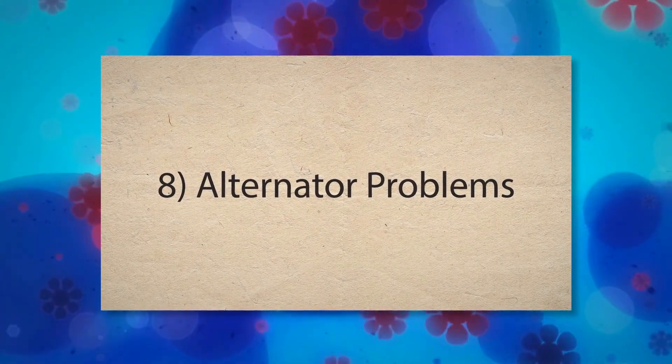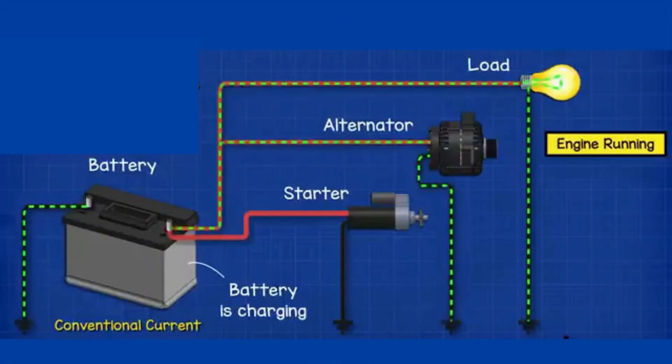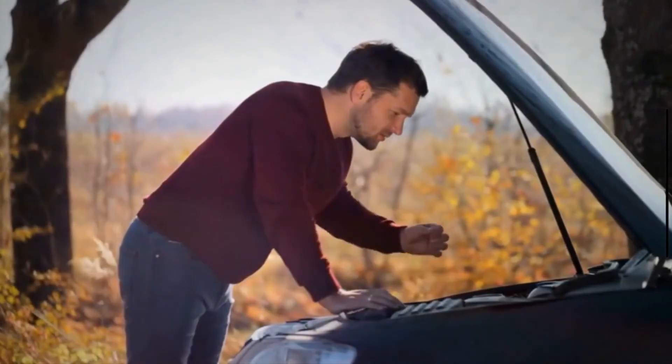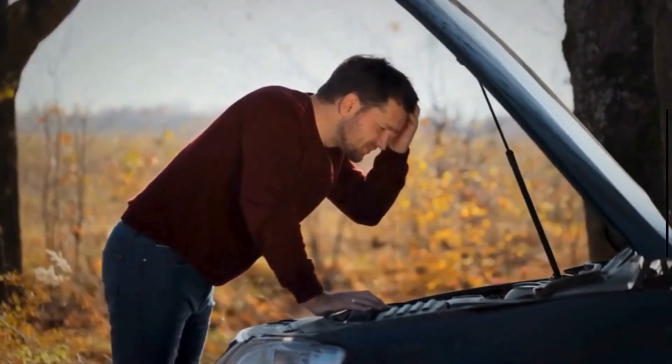Eighth, alternator problems. The alternator charges the battery and powers the vehicle's electrical systems. If it fails, the battery can drain, leading to inconsistent electrical supply. This can affect engine performance, including fluctuating RPM.